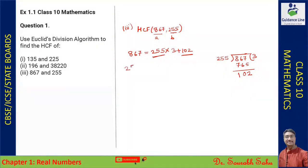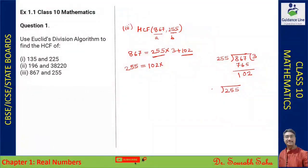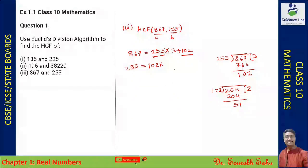Now 255 becomes the new a and 102 becomes the new b. I am dividing 255 by 102: it goes 2 times, giving 204, with remainder 51. So 255 = 102 × 2 + 51.